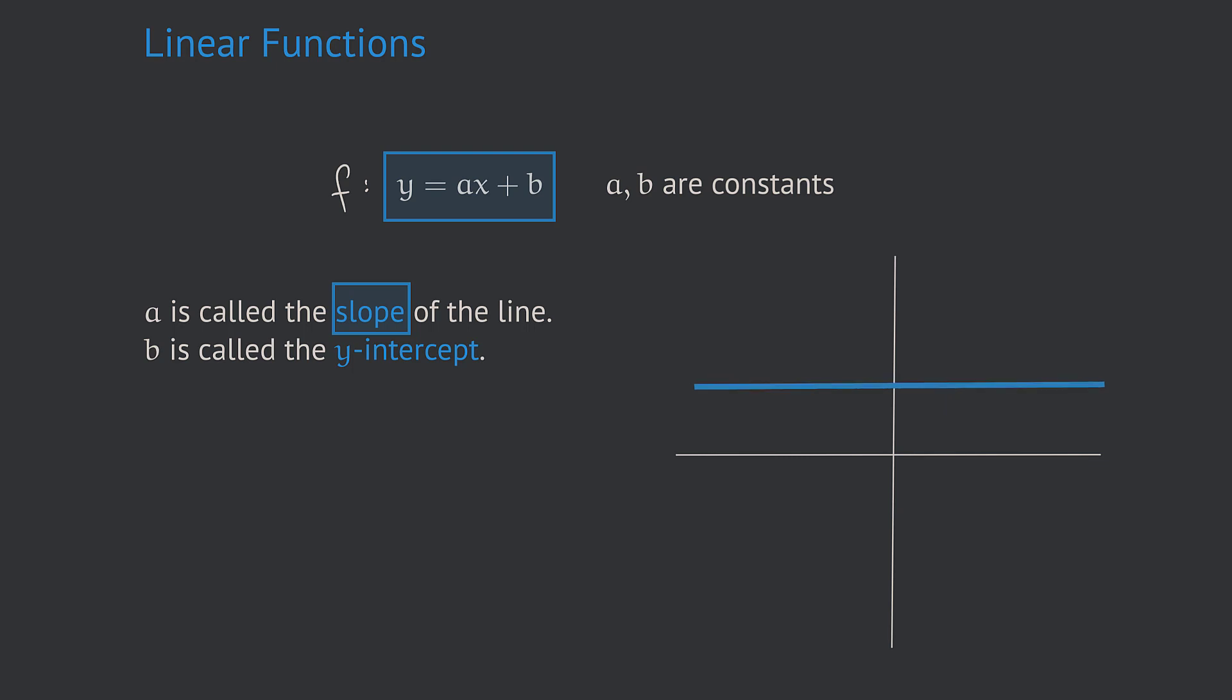In the extreme case when the linear function is perfectly parallel to the x-axis, the slope is exactly 0, because we cannot even draw such a triangle, because delta y is just 0.